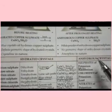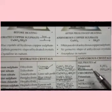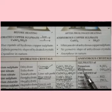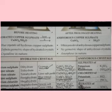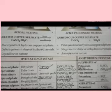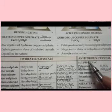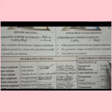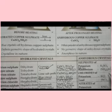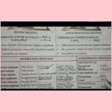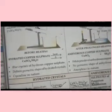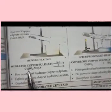Anhydrous crystals: salts like potassium sulfate, ammonium sulfate, potassium chloride, lead chloride, and sodium chloride are all anhydrous substances because they do not contain any fixed number of water of crystallization molecules in loose chemical combination.